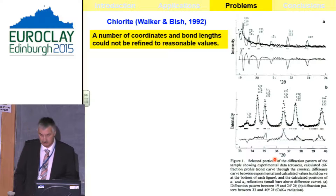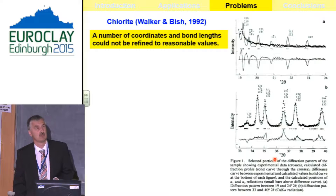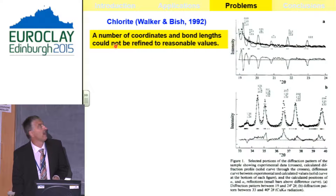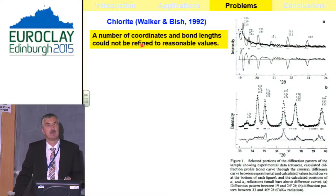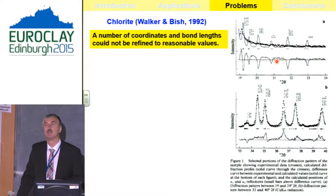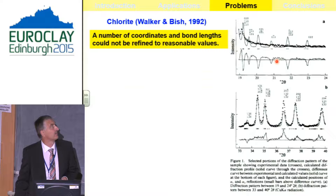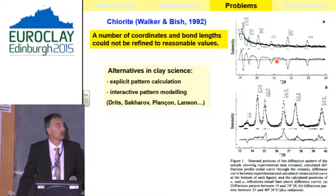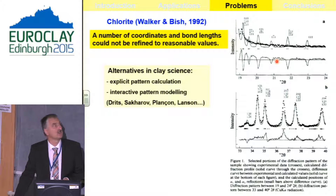Unfortunately, we have some restrictions with structure refinement for clay minerals. One example demonstrated for chlorite shows that a number of coordinates and bond lengths could not be reasonably refined — due to intensity misfit, meaning our peak profile model cannot describe reality and so cannot put intensity on the right structure factors. Fortunately, there are a lot of alternatives in clay science, and the explicit pattern calculation and interactive pattern modeling has mostly contributed to our knowledge about the structure of clay minerals.